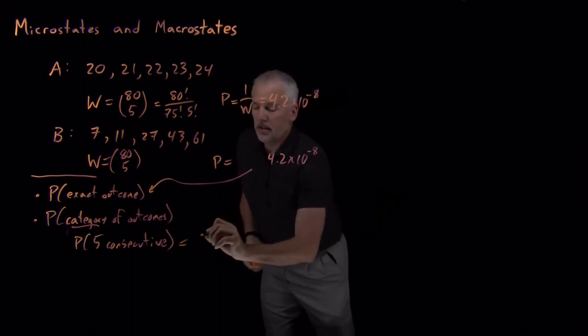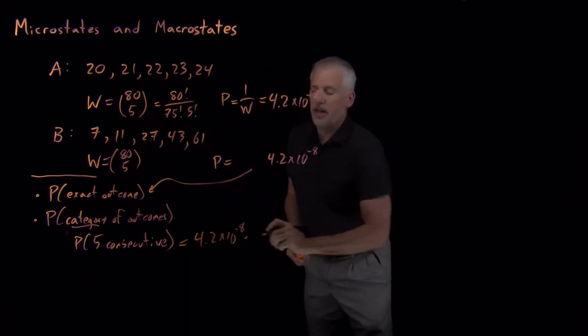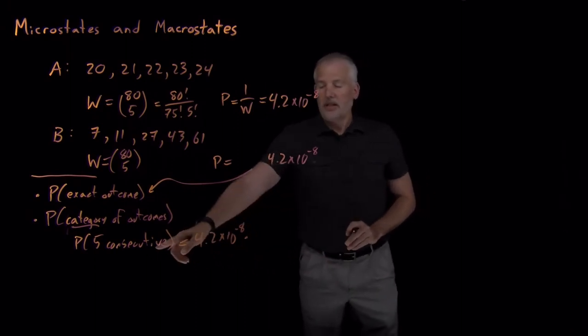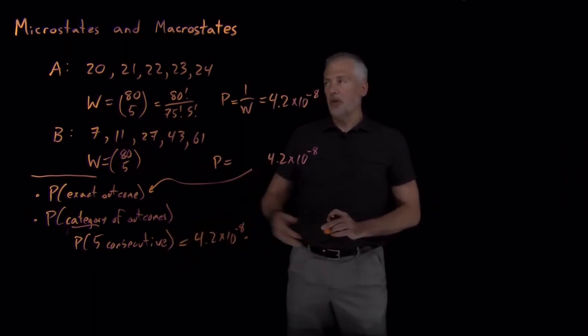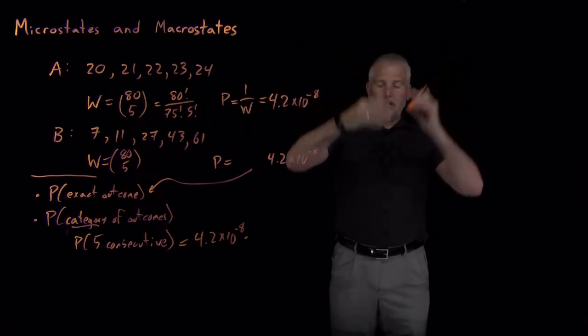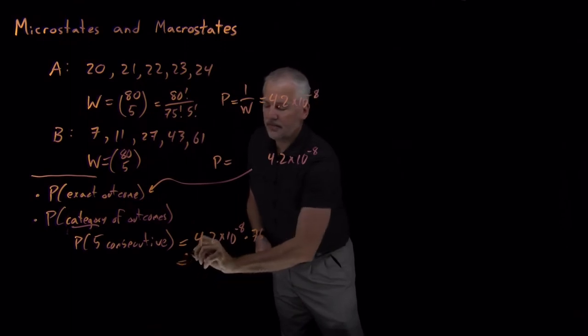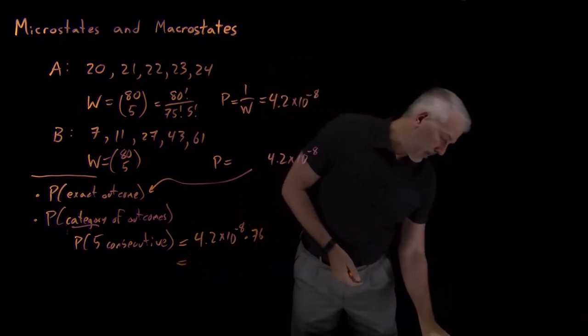So there the odds would have been the odds of any one of those outcomes multiplied by the number of different consecutive outcomes we can have. So the first number could have been anywhere from a 1 through a 76, which would result in a final number of 80. So multiply that by 76.